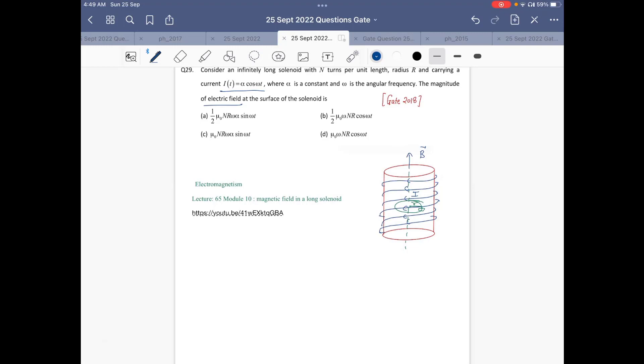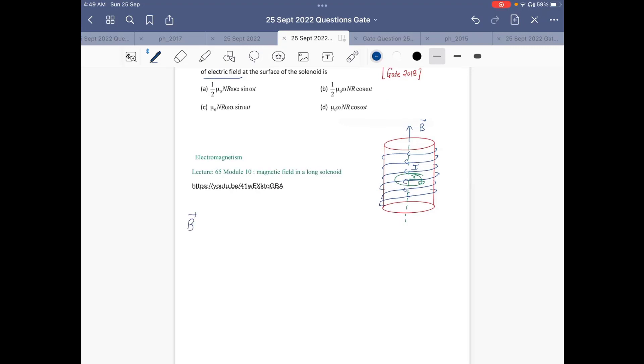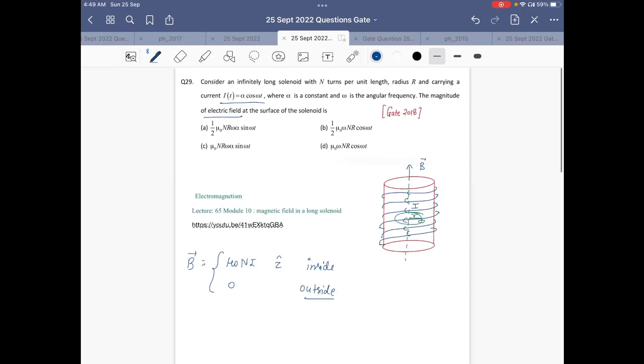The magnetic field due to a solenoid is given by B = μ₀NI in the z-cap direction inside the solenoid and it is zero outside the solenoid, where z-cap is the direction along the axis of the solenoid.